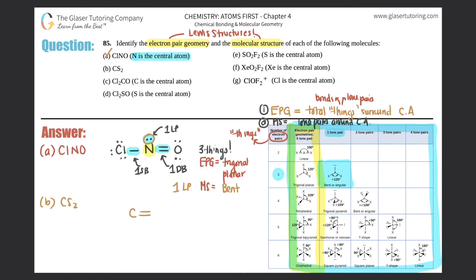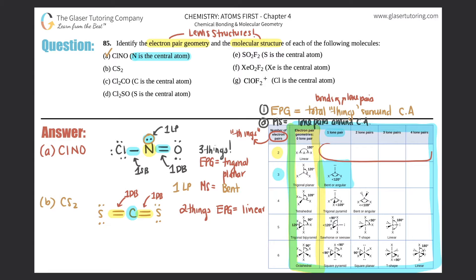Part B: CS₂. The Lewis structure has carbon in the middle double-bonded to each sulfur, with two lone pairs on each sulfur. Looking at the central atom, carbon has one double bond and another double bond — that's two things, no lone pairs. Two things is linear. So electron pair geometry is linear, and since there are zero lone pairs, molecular structure is also linear.